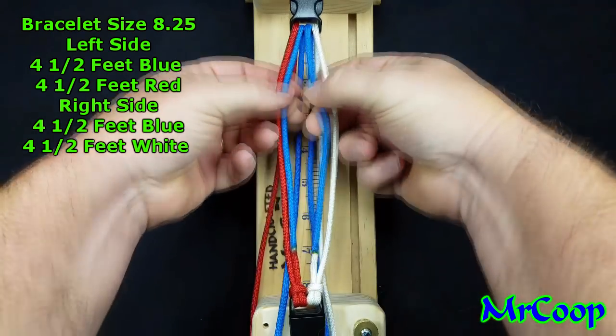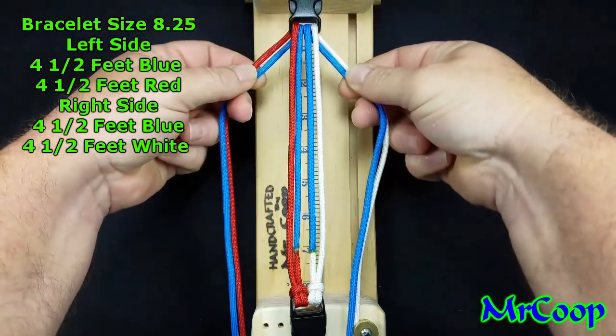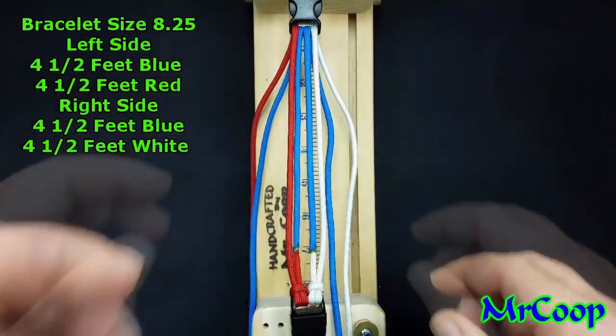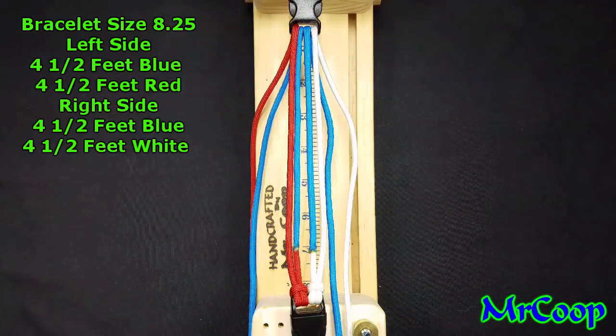I ran them up as you can see from the bottom, blue in the middle, white and red on the outsides. Came down through the top of my buckle. So to start this off, let's get started.